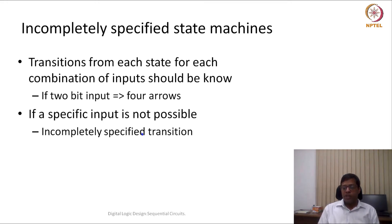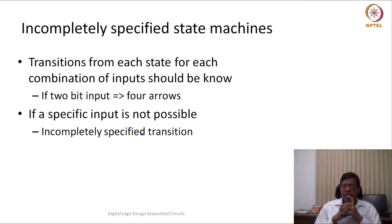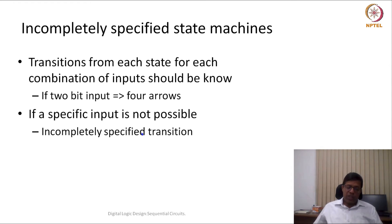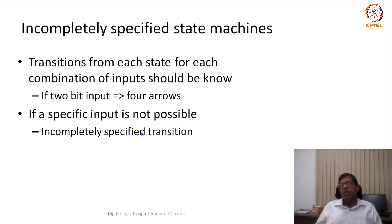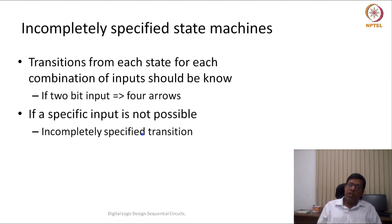Incompletely specified state machines are a very interesting case because in the state machine it looks like certain arrows are missing. This becomes even more interesting when we go to reduce the state machine. In case of reduction, if the machine is incompletely specified, then sometimes we can optimize — similar to how we optimized in K-maps with don't-care conditions.